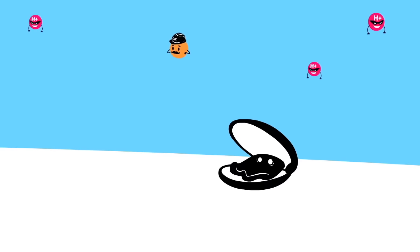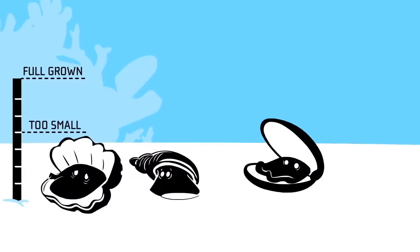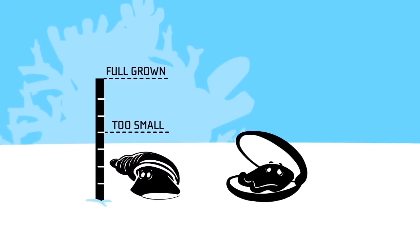our little friends have to spend more energy building their shells and have less energy for finding food. That means it's harder to grow, and more will die off before they get big.